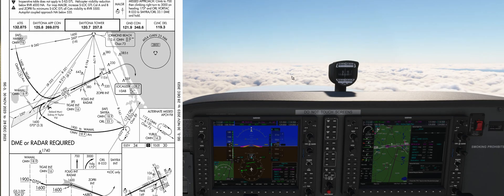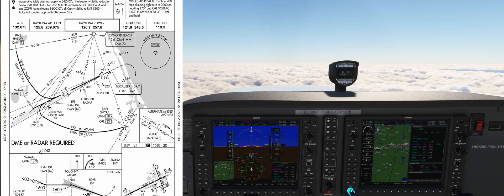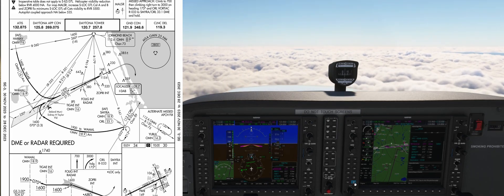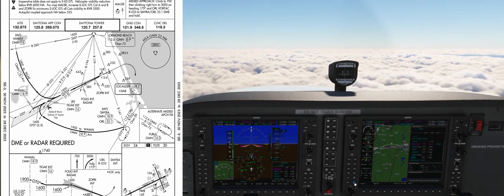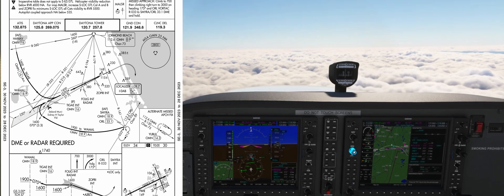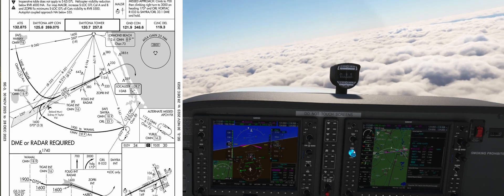As we look at the lateral graphical information, the approach is fed by two DME arcs, one from the north and one from the south, as well as ATC vectoring, which we are going to simulate this time as we descend towards the approach. FOLIG is our final approach fix. Also, DME is required for the approach, and we have that with our GPS replacing the DME in the G1000 system.